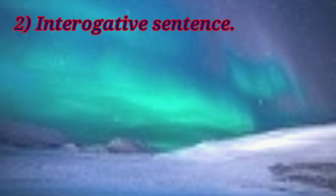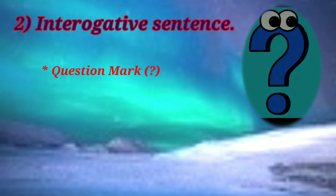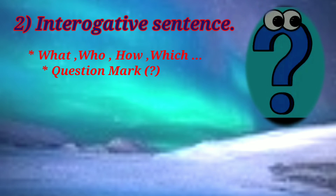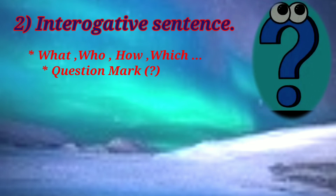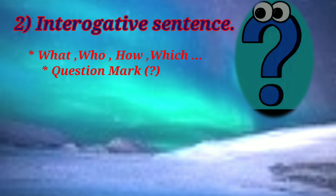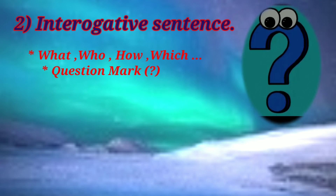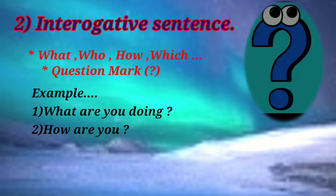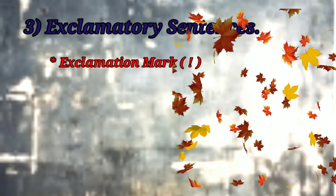The second type is interrogative sentence, which is very simple and easy to identify. All question sentences are interrogative — they have a question mark. Words like what, who, how, which, etc. are used in interrogative sentences. You can easily differentiate them from other sentences. Examples of interrogative sentences: 'What are you doing?' 'How are you?' etc.